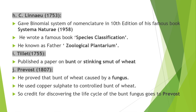C. Linnaeus gave the Binomial system of nomenclature in the 10th edition of his famous book Systema Naturae in 1758. He wrote Species Plantarum and is known as the father of zoological plantarium. Tillet published a paper on burnt or stinking smut of wheat. Prevost proved that bunt of wheat is caused by fungus and used copper sulphate to control it.